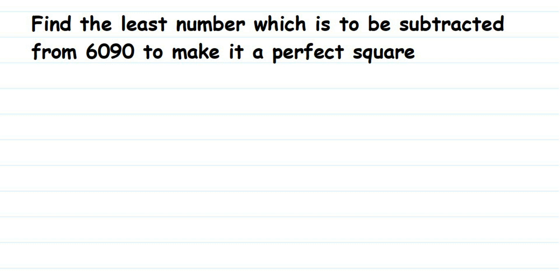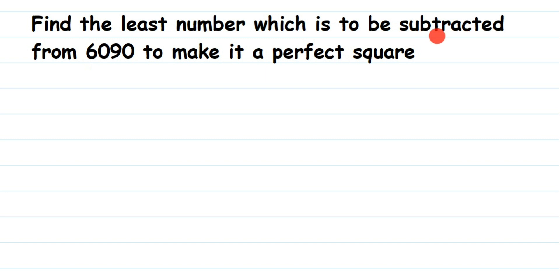Hello everyone. Here I have a question from squares and square roots, and this type of question is really important. They're asking: find the least number which is to be subtracted from 6090 to make it a perfect square. So 6090 is not a perfect square — we have to make it a perfect square by subtracting a number from it.